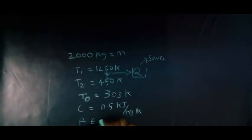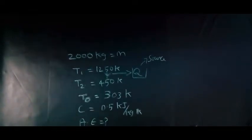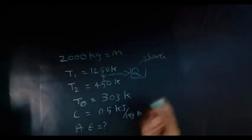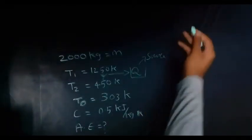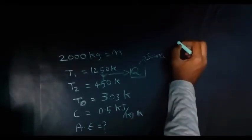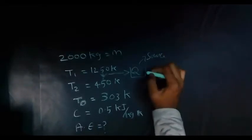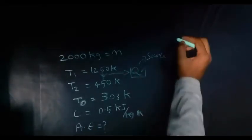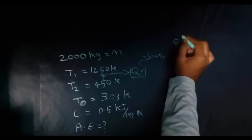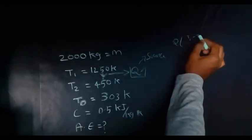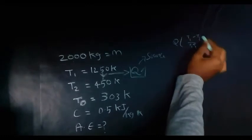We have to find the available energy. To find the available energy, I have given two relations in my previous videos, so we have to choose the correct relation. Here we don't know the value of Q, so we can't use Q into T1 minus T2 divided by T1 T2.